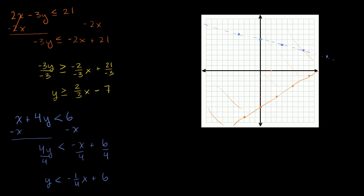The graph of this equation is that dotted line, because it's not less than or equal to — it's just less than. So this inequality's solution is the area below the dotted blue line. For any x, the y values that satisfy the inequality are those below the line.